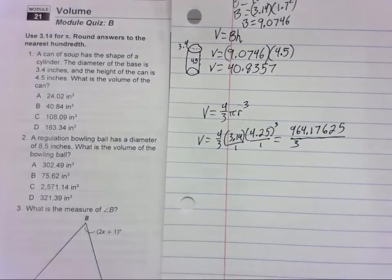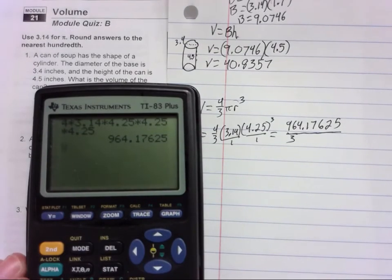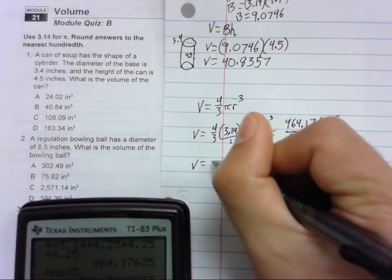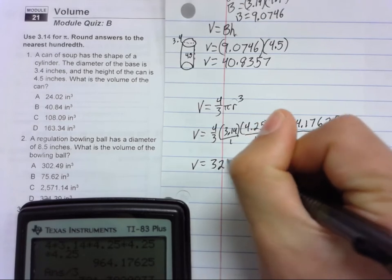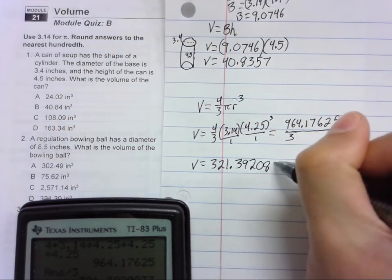So we get when we multiply it all the way across, and now we have to divide that number by three, and we get volume is 321.39208333.